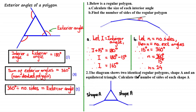The diagram shows two identical regular polygons, shape A, and an equilateral triangle. Calculate the number of sides of each shape A. Here we have two identical regular polygons joined by an equilateral triangle. From the previous question, we learned that to find the number of sides of a regular polygon, all we need is an exterior angle. So if we can find an exterior angle of shape A, we can find the number of sides.